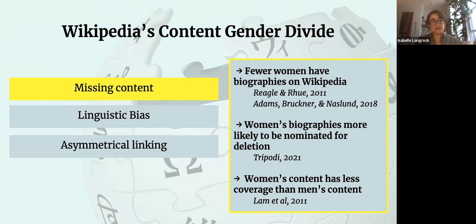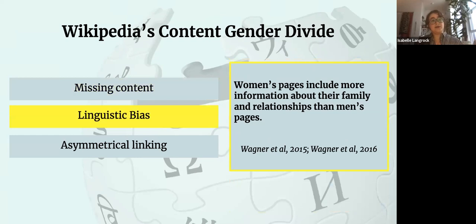So we see this missing content exists on several different levels. And continuing looking at pages that do exist, we can also see evidence of what's called linguistic bias, which means that women's pages are more likely to include more information about family, relationships, things that specifically mention gender than men's pages, so you can think about how this reinforces certain stereotypes that exist.